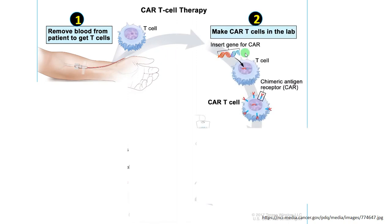In step two, we make CAR T-cells in the lab. Inactive viral vectors are used to transfer the CAR gene into the T-cell. This gene is then expressed and the chimeric antigen receptor proteins are formed on the surface of the T-cell. So now we have a CAR T-cell with chimeric antigen receptors.